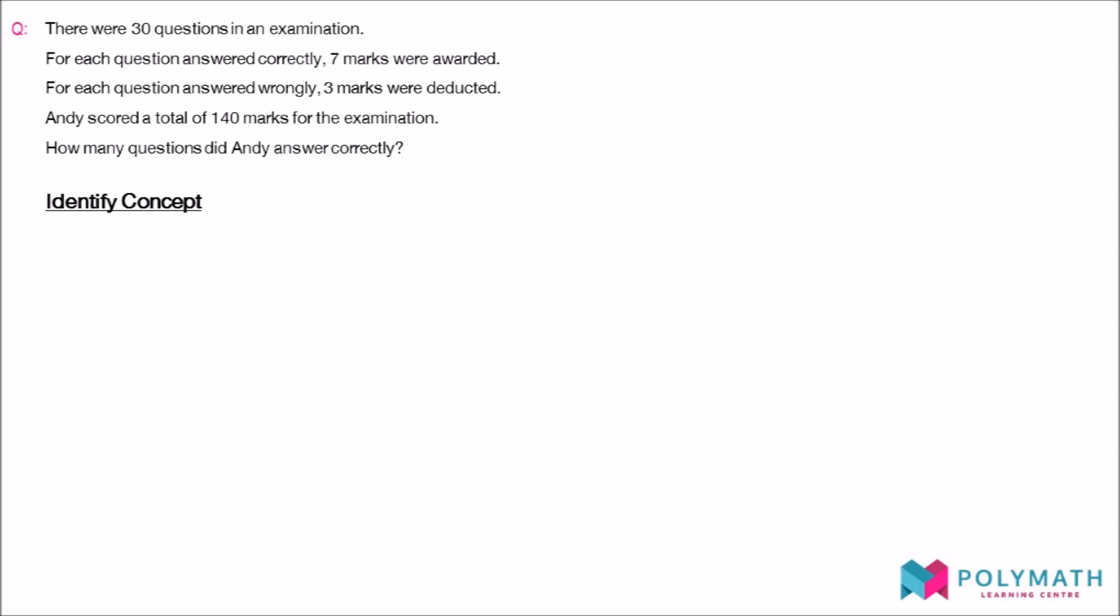So, how do you correctly identify an assumption question? The first thing to remember is that assumption questions are very secretive. Assumption questions try to confuse you by telling you the total number of two different objects, without telling you exactly how many of each is in the total.